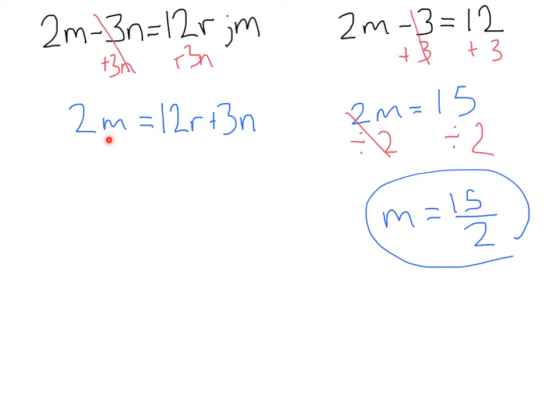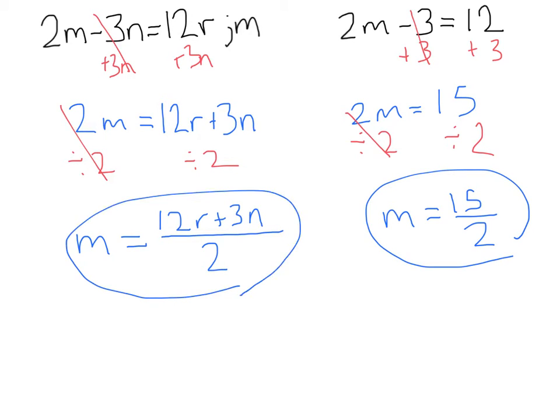And we have our answer. Back over here, we still have this 2 times m. So, we're going to do the same exact thing. We're going to divide the left by 2, divide the right by 2. Now, these are going to cancel. We're going to be left with m equals. Because we have these variables, r and n, it doesn't change anything. We're still going to put it over a fraction of 2. So, here on top, we have 12r plus 3n. And all we did was divide this whole side by 2. And there's our answer. m equals 12r plus 3n, all divided by 2.